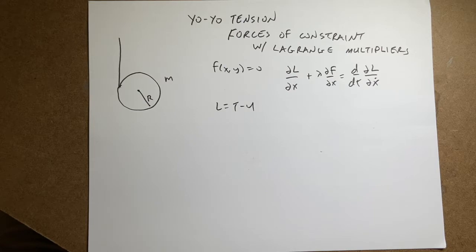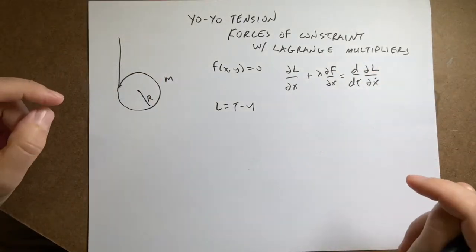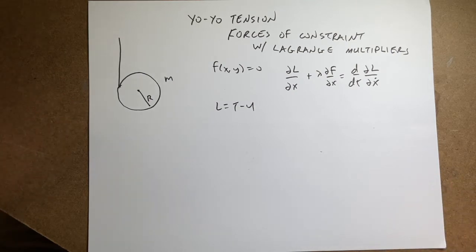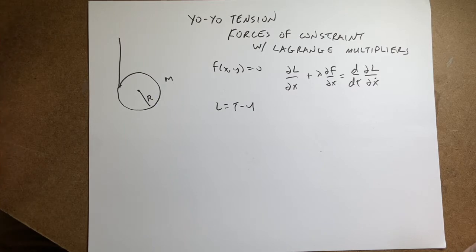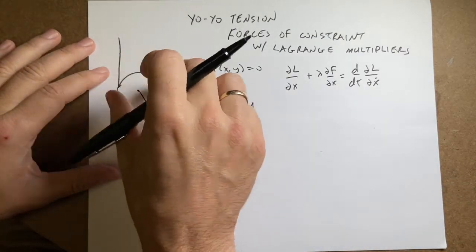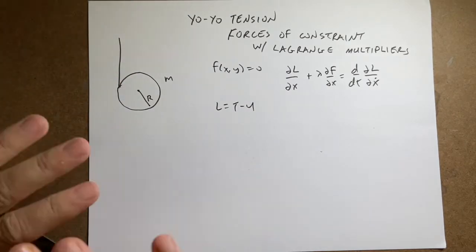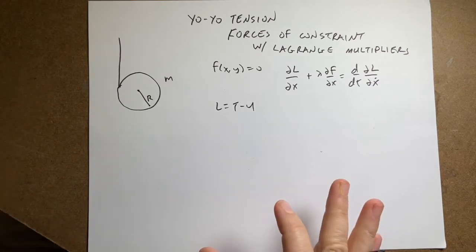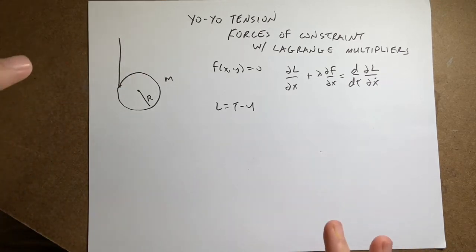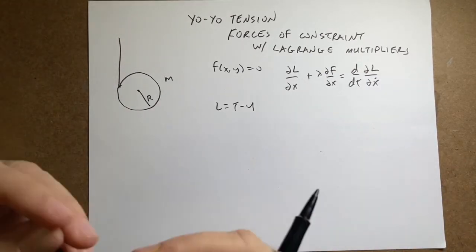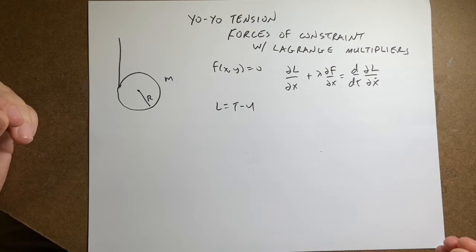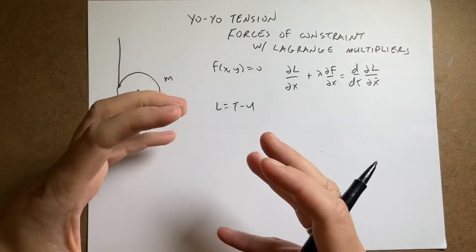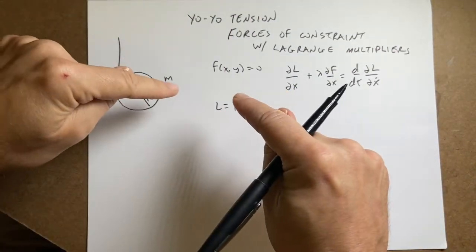There's a lot there, but I've already done a problem like this — I'll link it below. In this problem, the first thing to think about is how many degrees of freedom the yo-yo has. The answer is one: the angle of rotation completely defines the system. However, you can't find the tension that way. So in order to find the constraint force, which is the tension, you need more degrees of freedom than you'd expect. Let's pick two, then constrain down to one to find the force of constraint.